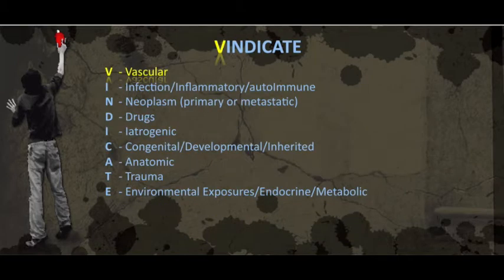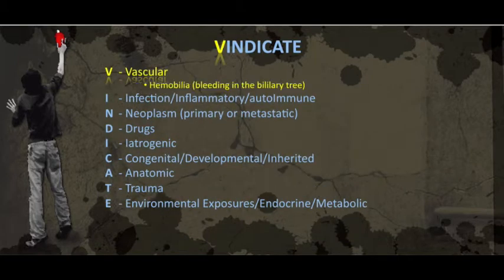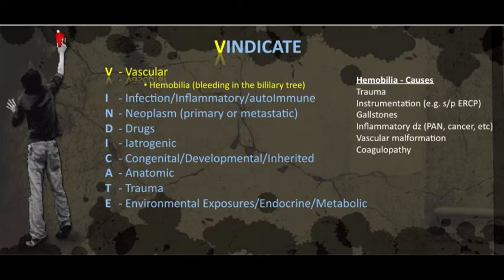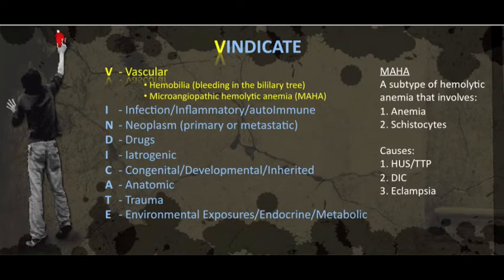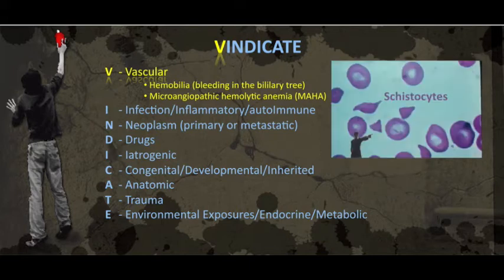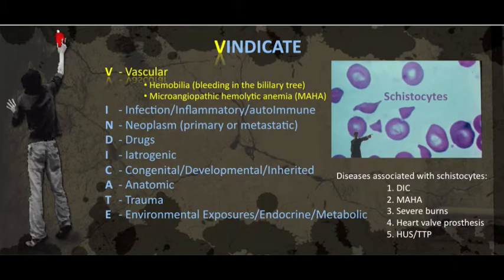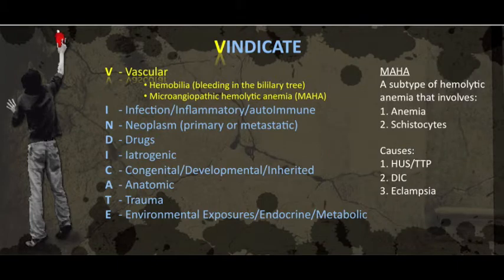The V in VINDICATE is for vascular. For jaundice, we have hemobilia, which is probably fairly uncommon. It's a fistula that connects the vessels to the bile ducts, and it has numerous causes including those listed, and it has a classic triad. Next, MAHA, which is a form of hemolytic anemia. It's identified by the finding of anemia and schistocytes on peripheral blood smear. The most important causes of MAHA include TTP, HUS, DIC, and eclampsia.